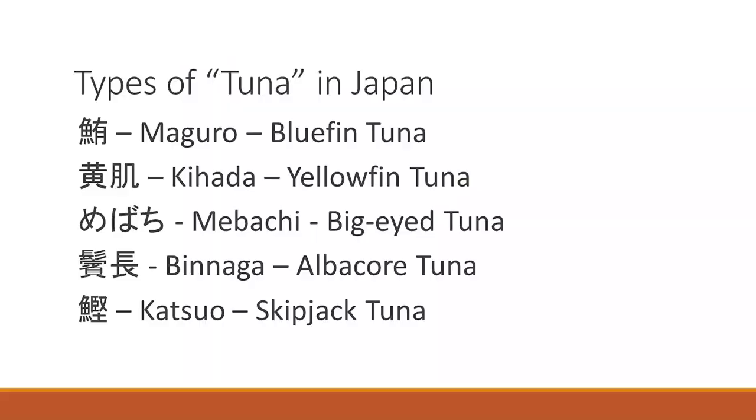Let's have a look at another example. Most of us enjoy a good tuna sandwich. But did you know that tuna has different classifications in Japan? The Japanese classify tuna into different species — Maguro (bluefin tuna), Kihada (yellowfin tuna), Mebachi (big-eyed tuna), Binaga (albacore tuna), and Katsuo (skipjack tuna). To the Japanese, these are all very different fishes. But for the non-Japanese, especially many English speakers, tuna is just tuna.